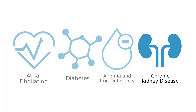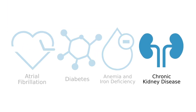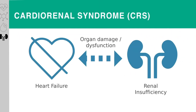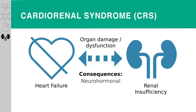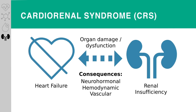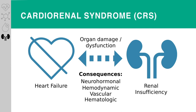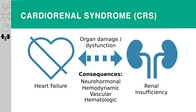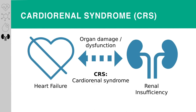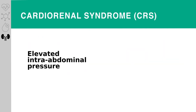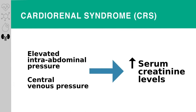The last comorbidity we'll discuss is chronic kidney disease or cardiorenal syndrome. Cardiac and renal dysfunction often occur in concert with neurohormonal, hemodynamic, vascular, and hematologic consequences. The complex interaction between cardiac and renal function is now recognized and defined as cardiorenal syndrome, or CRS, when renal dysfunction and heart failure mutually reinforce each other. Both elevated intra-abdominal pressure and central venous pressure are linked to rising serum creatinine levels, and elevated renal vein hydrostatic pressure is an important mechanism in volume-expanded patients.